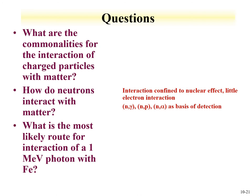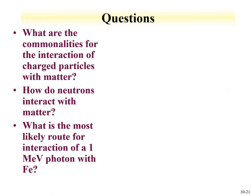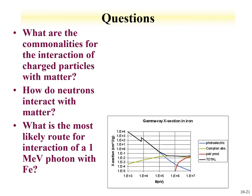If one wants to make a neutron detector, use a material with high neutron interaction that can then be observed. You should also be able to evaluate the most likely interaction route for a 1 MeV photon with iron. Given cross-section data as a function of energy for photoelectric effect, Compton absorption, Compton effect, and pair production — since pair production requires over 1 MeV to make a positron-electron pair — at 1 MeV the dominant interaction for iron is Compton scattering.